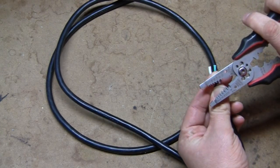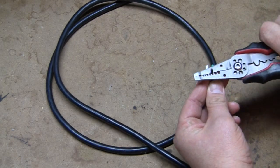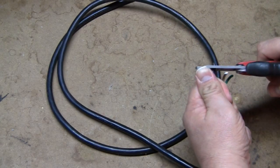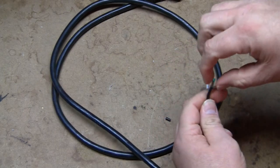And for this example we have a 14 gauge wire. Close it up, add some pressure, and the sleeve of the wire comes off very cleanly.